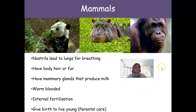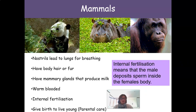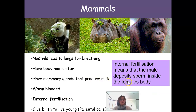The first group of vertebrates we are going to look at are mammals. They have nostrils that lead to lungs for breathing, body hair or fur, and mammary glands that produce milk. They are warm-blooded, have internal fertilization, and give birth to live young, so there is some form of parental care. Internal fertilization means that the male deposits sperm inside the female's body.